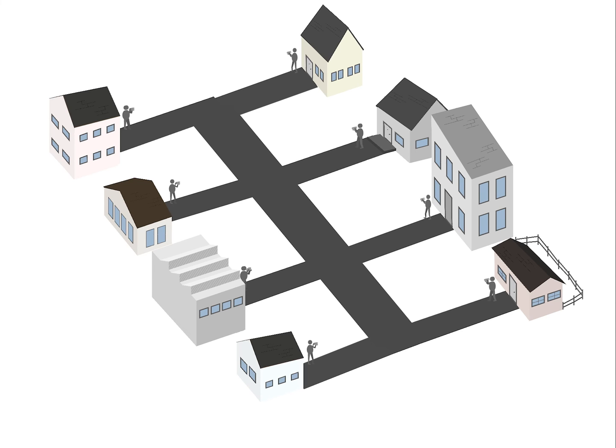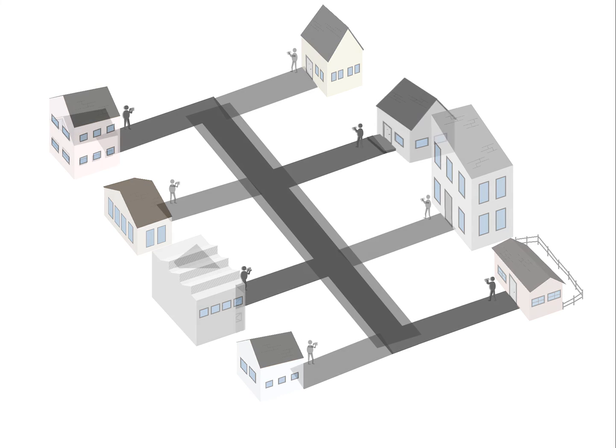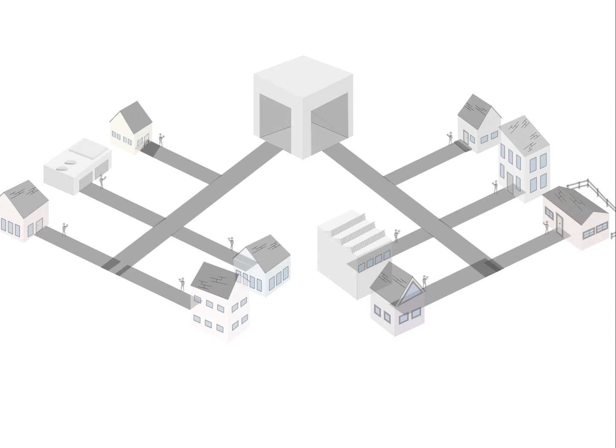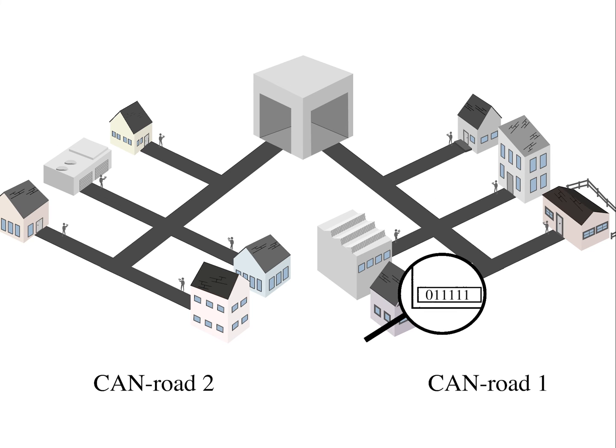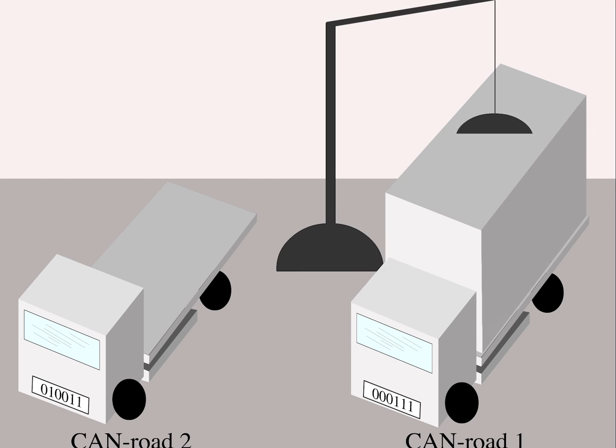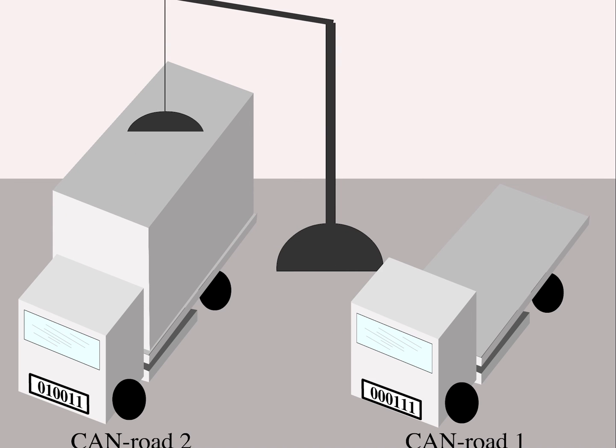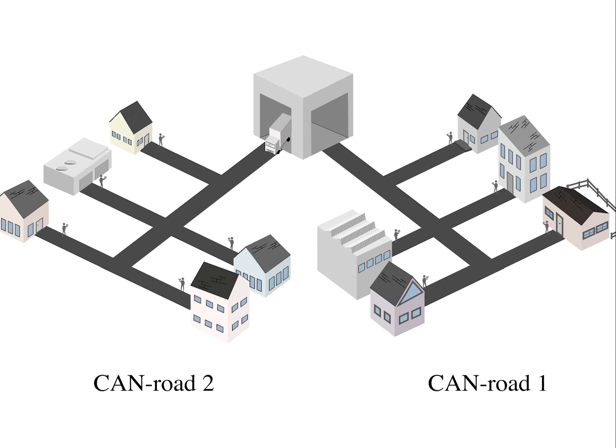The car industry resolved to extend the capacity of CAN with the help of gateways. A gateway can be imagined as a kind of loading dock between two CAN roads. A truck with a specific load and number plate from CAN road 1 drives into the loading dock and parts of its load are moved to another truck with a different number plate tailored for CAN road 2. This way, information from CAN road 1 can be made available on CAN road 2.